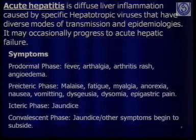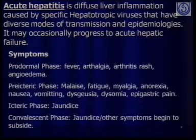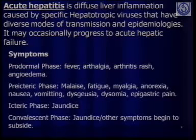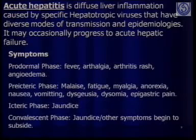The pre-icteric phase includes general malaise, fatigue, myalgia, anorexia, nausea, vomiting, dysgeusia, dysomnia or sleeplessness, and epigastric pain. Thereafter the major symptom becomes jaundice. Jaundice is not a liver disease but a symptom common to almost all liver diseases. It refers to above-normal serum bilirubin levels because remnants of RBCs cannot be excreted due to liver malfunction, causing yellowness of the sclera, skin, clay-colored stools, and deep yellow to orangish urine.